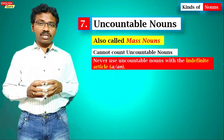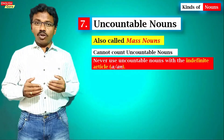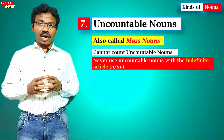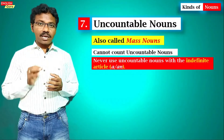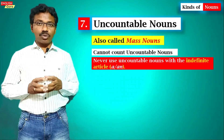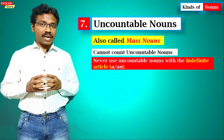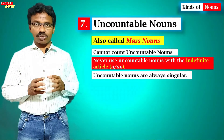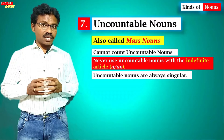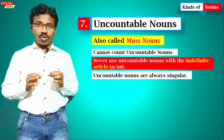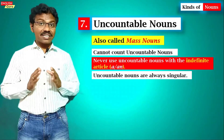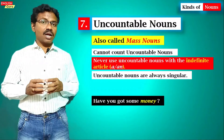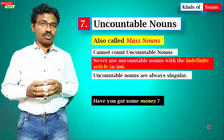Uncountable nouns should not be used with indefinite articles a and an. So a and an should not be used with uncountable nouns. And the most important thing is uncountable nouns are always singular. There is no plural for uncountable nouns.